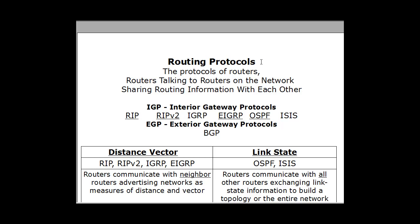What are we talking about when we say routing protocols? Routing protocols are the protocols of routers — routers talking to routers on the network, sharing routes and routing information with each other. Routing protocols are different from a routed protocol. A routed protocol would be something like IP, the internet protocol. TCP/IP is a routable protocol, a routed protocol. A routing protocol is different — it's a protocol used by a router.